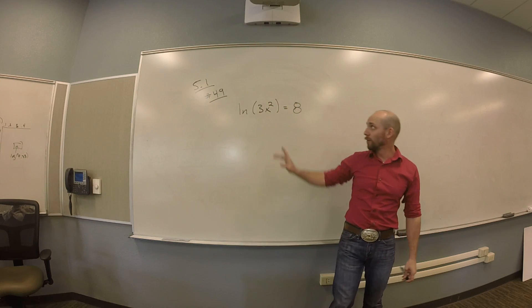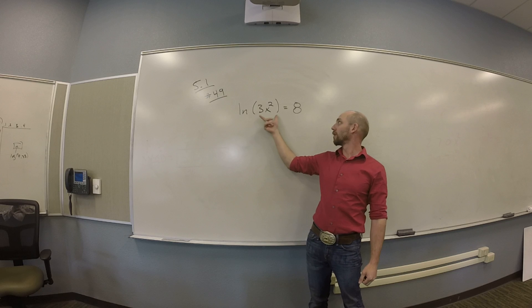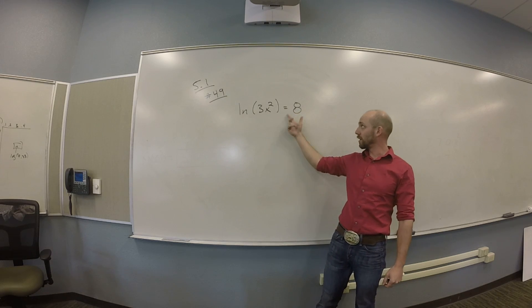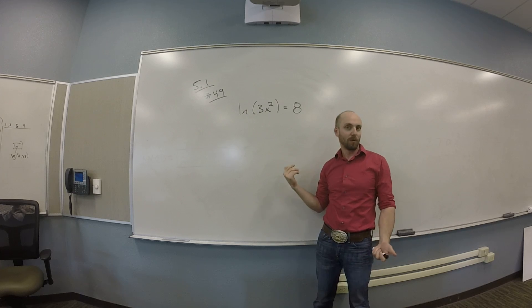All right, so let's see if we can do number 49 out of 5.1, which says the natural log of 3x squared equals 8. And they want us to solve for x, probably.